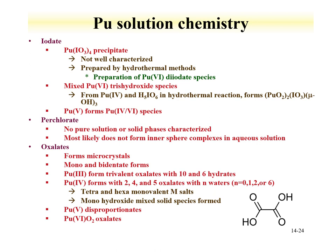Other compounds include iodates, which have been precipitated but are not well characterized and have been prepared by hydrothermal methods. Perchlorates are used for non-coordinating systems; no pure solution or solid phases are characterized, and they most likely do not form innersphere complexes. The oxalate is a very common ligand used to precipitate plutonium — microcrystals can be formed. Plutonium-3 and -4 form precipitates; the 3 forms with 10 to 6 waters, and the 4 can form with 2, 4, or 5 oxalates with 0 to 6 waters. Plutonium-5 tends to disproportionate, and plutonium-6 oxalates can be formed in solution and will precipitate.